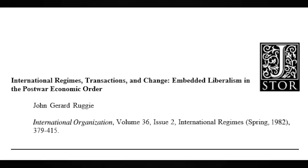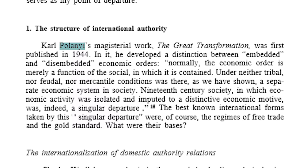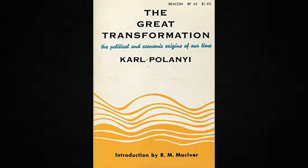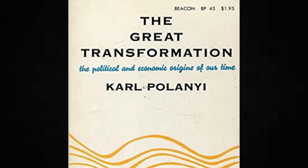Ironically, the phrase embedded liberalism itself wasn't coined until 1982, shortly after the neoliberal revolution. It was first used by a scholar named John Gerard Ruggie in an analysis of the postwar economic order. However, Ruggie states that he himself borrowed the concept of embeddedness from Karl Polanyi, a Hungarian-American socialist philosopher. It is from Polanyi's major work, The Great Transformation, from 1944, that the term embeddedness was taken to describe embedded liberalism.